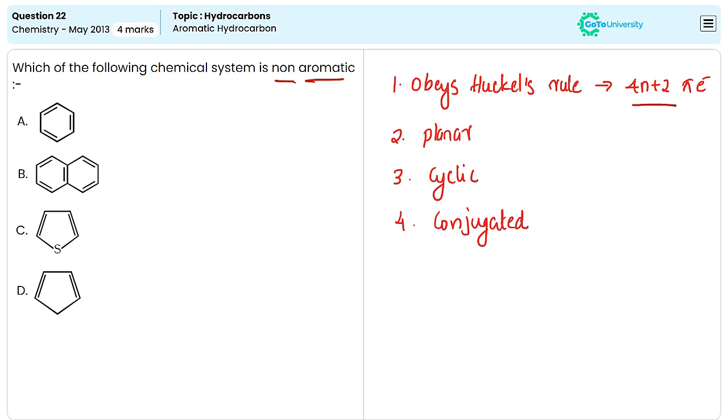And the last criteria is conjugation. The molecule must have a conjugated system of alternating double and single bonds within the ring, which allows for a continuous overlapping of pi orbitals.